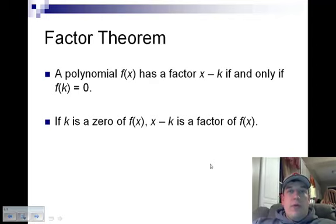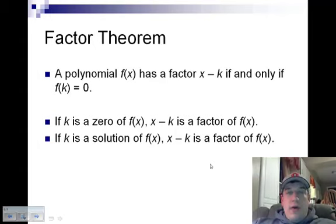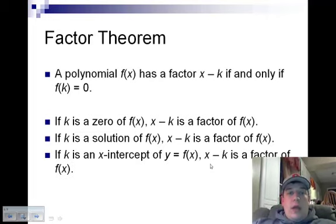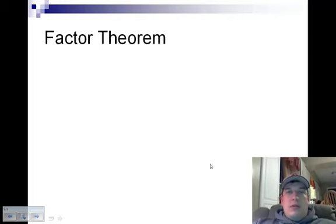So if 2 were a 0 of f of x, x minus 2 would be a factor. If k is a solution of f of x, then x minus k is a factor, meaning if negative 3 was a solution, x minus negative 3, or x plus 3, would be a factor. And if k is an x-intercept of the graph y equals f of x, x minus k is a factor. So if the graph crossed the x-axis at 3, I could say x minus 3 is a factor.